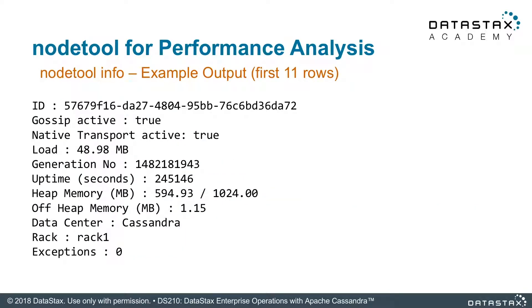If I run this command on the command line, this is an example of the output. You can see the basics: what's online, how much load it has — 49 megabytes of disk space used — how much uptime in seconds, how long since it's been started. Then the heap: I have one gig of heap allocated, of which 594 megs are being used, so I shouldn't see it running out of memory anytime soon. The off-heap memory shows how much is being used in main memory for things like mem tables stored off-heap, and then information about where the running node fits in the topology — the data center, the rack.